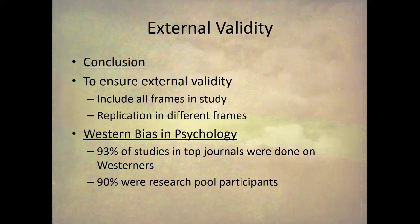However, while psychologists and research methods professors talk about how important external validity is, researchers don't really practice what they preach. There's a Western bias in psychology: a recent study looking at research published over a 10-year period found that out of the top journals, 93% of studies were done on Westerners — people in Western Europe or the United States — and something like 80% of subjects were Americans. In these studies, 90% were research pool participants, which is a really problematic situation.